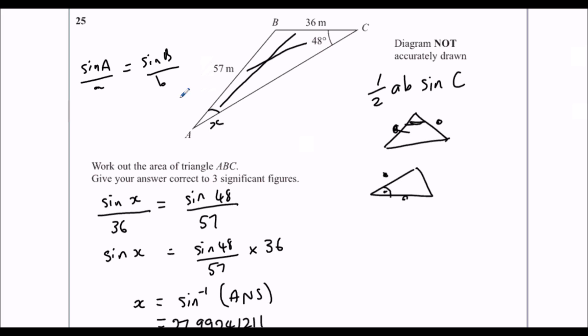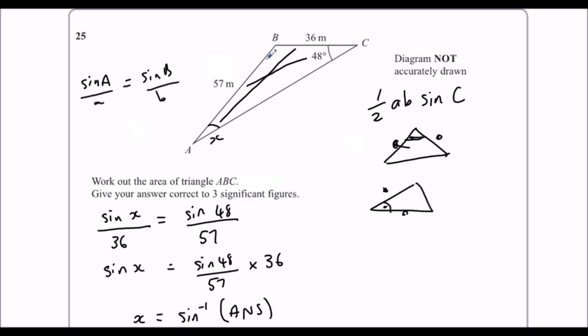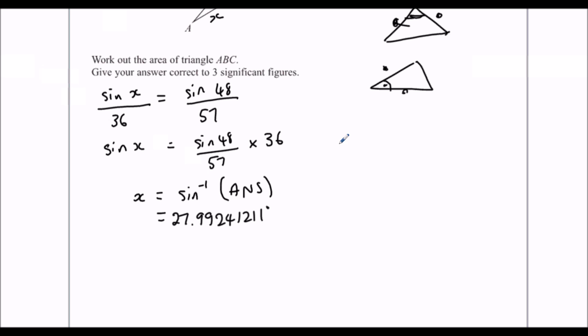So that's our x there. I don't really want the angle, I want this one here. But luckily, we know the angles from the triangle add up to 180 degrees. So our angle up here, I'm going to call it C. So our angle is 180 minus 48 minus the answer we just got, and that gives us 104.0075879. So that's our C, that's our angle at the top of the triangle, 104 point etc.